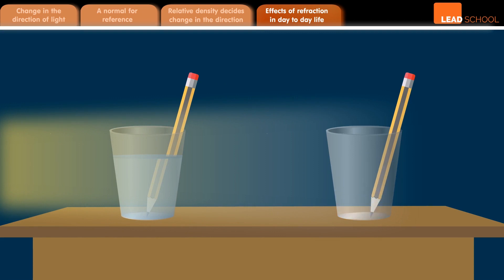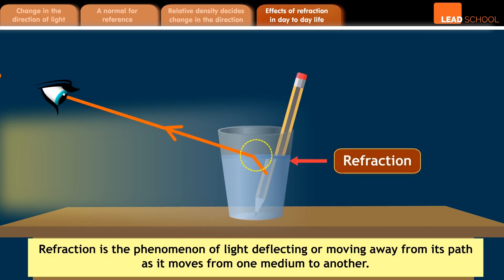So, that is refraction for you. To summarize, refraction is the phenomenon of light deflecting or moving away from its path as it moves from one medium to another.